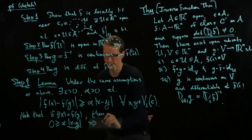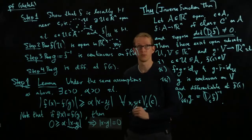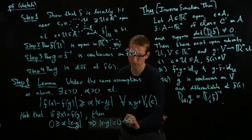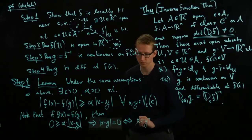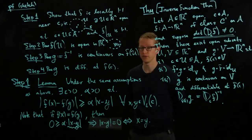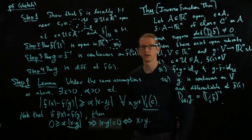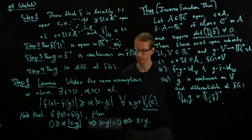So, by contradiction this implies that x minus y must be 0 and if x minus y must be 0 then this implies, and in fact here's an if and only if, x equals y. So, this lemma proves that the function f is one to one on some open neighborhood and in particular we've chosen a disk around c on which the function f is one to one